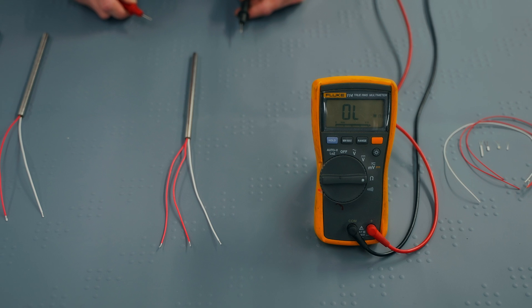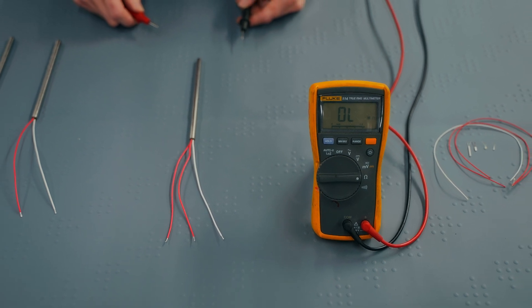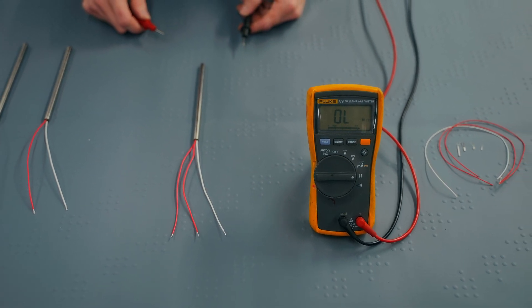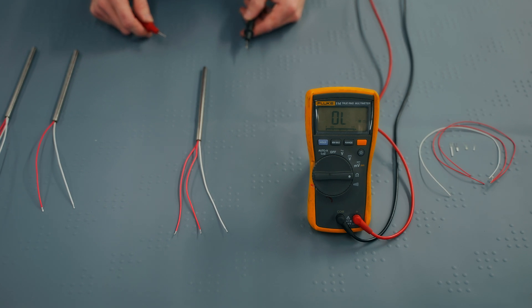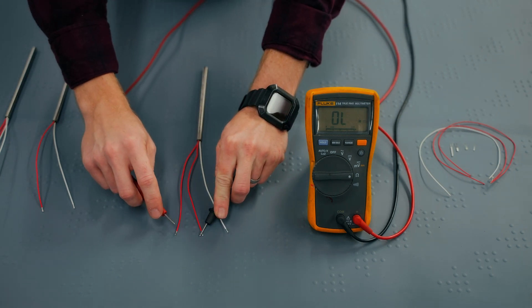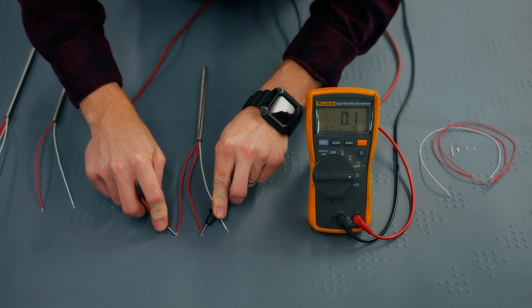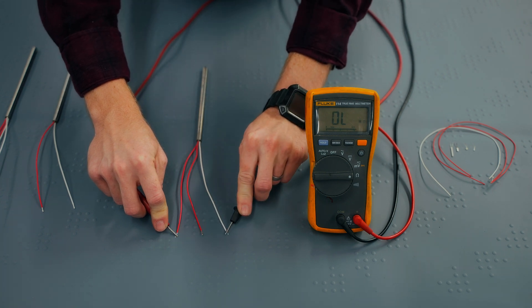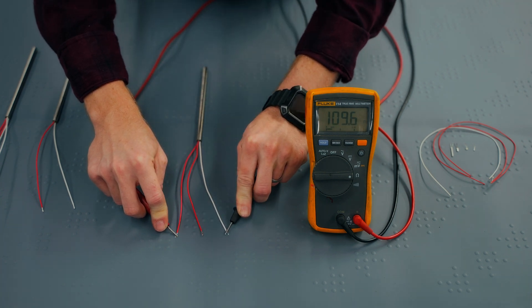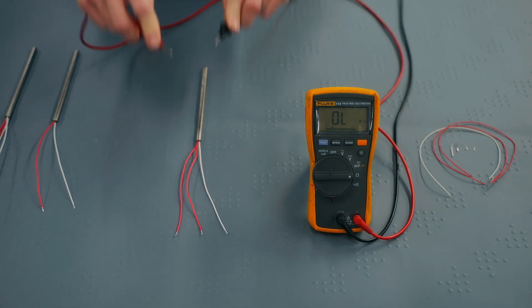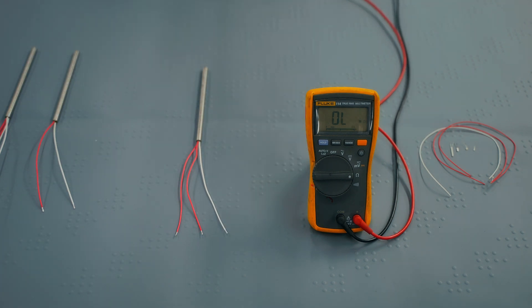On a three-wire RTD, two of the wires are connected to each other, and the third wire is connected to the opposite side of the platinum element. In general, these will be color-coded accordingly. Check the resistance between the two light color wires, and it should measure close to zero ohms. Then, check the resistance between the two dissimilar color wires. This RTD reads about 109 ohms, so it's functional.